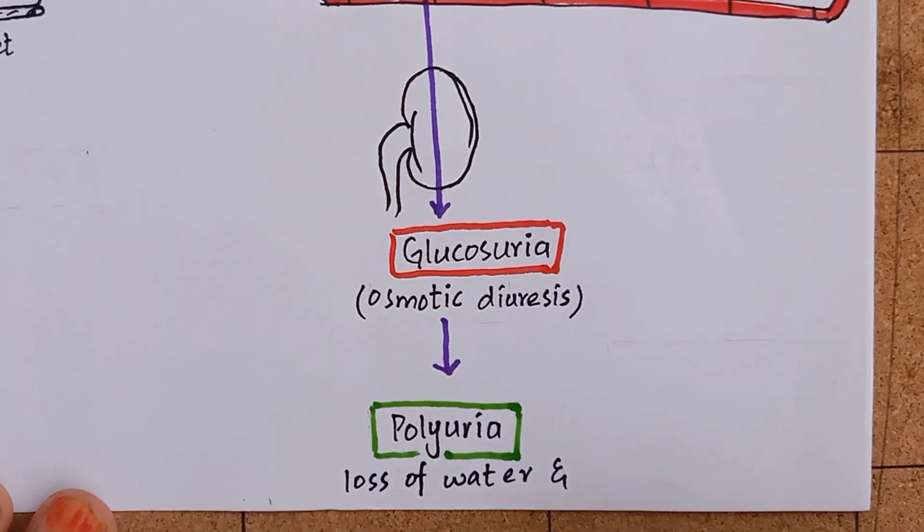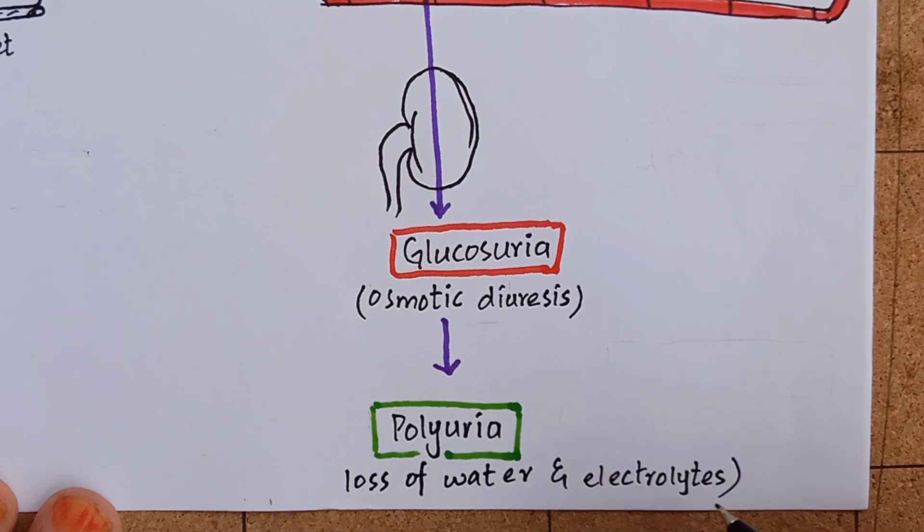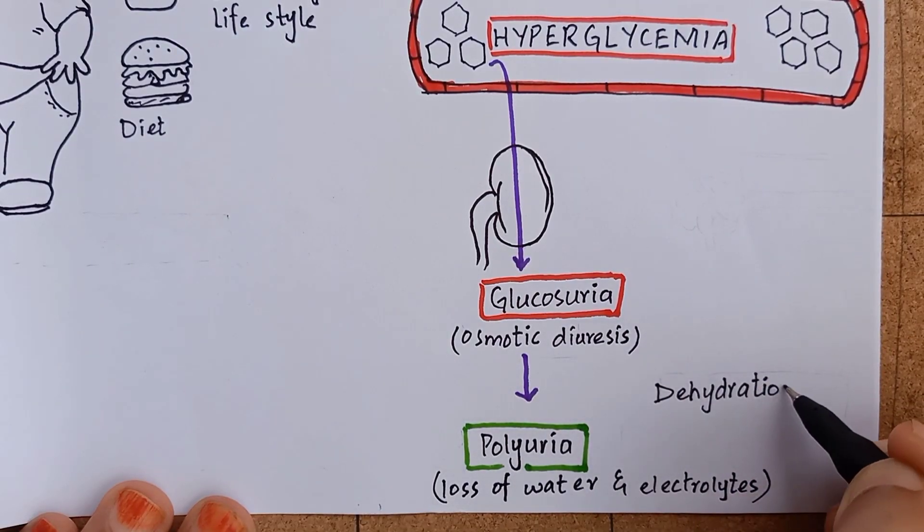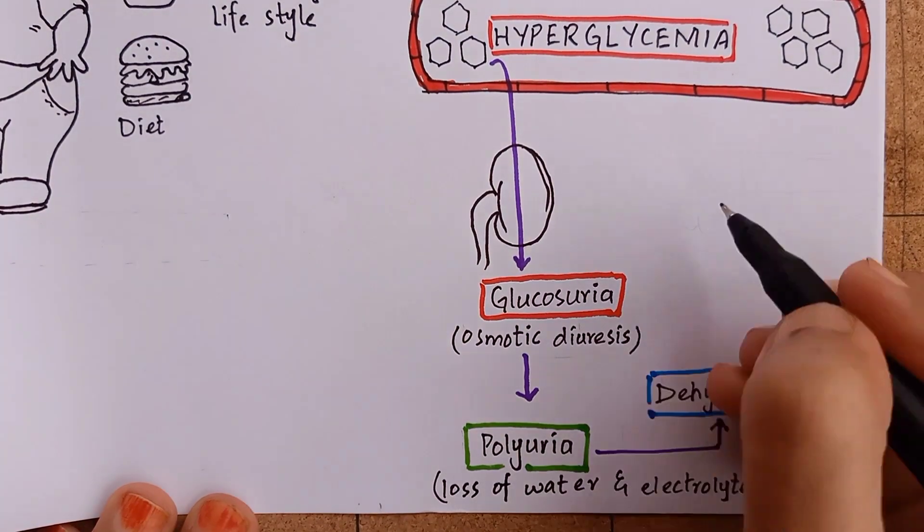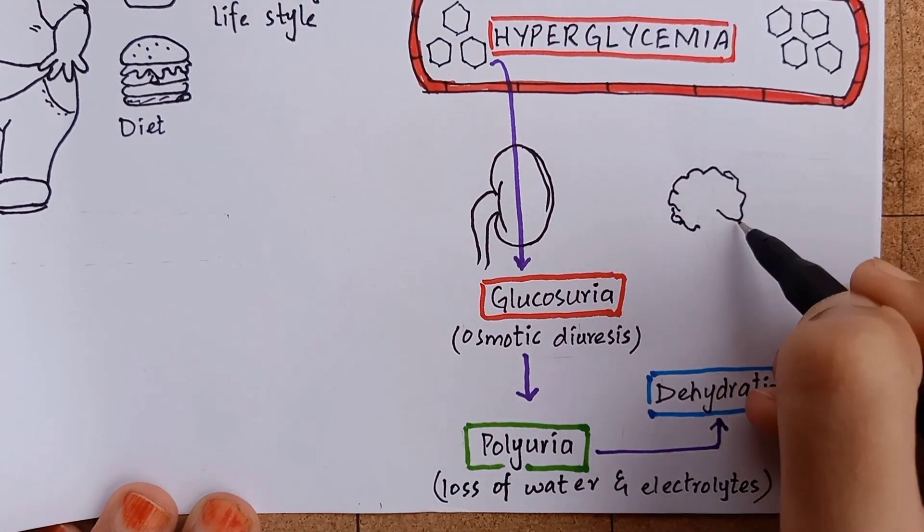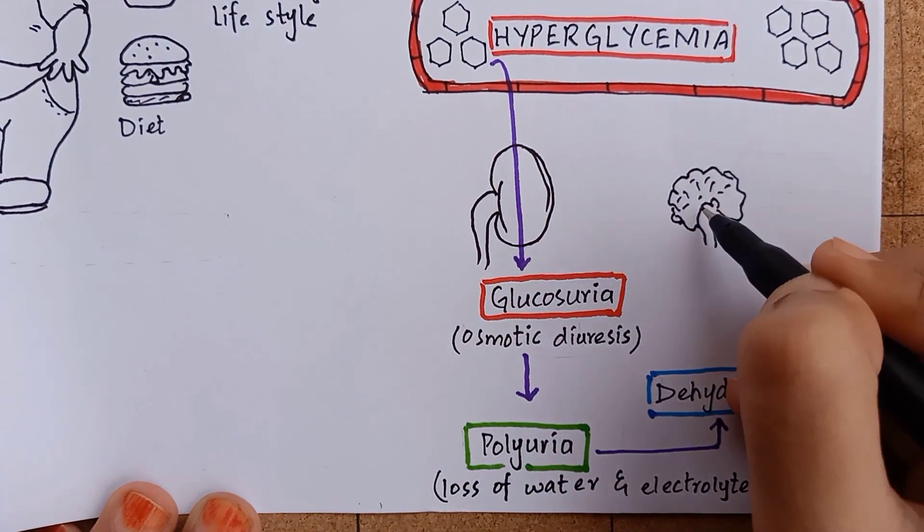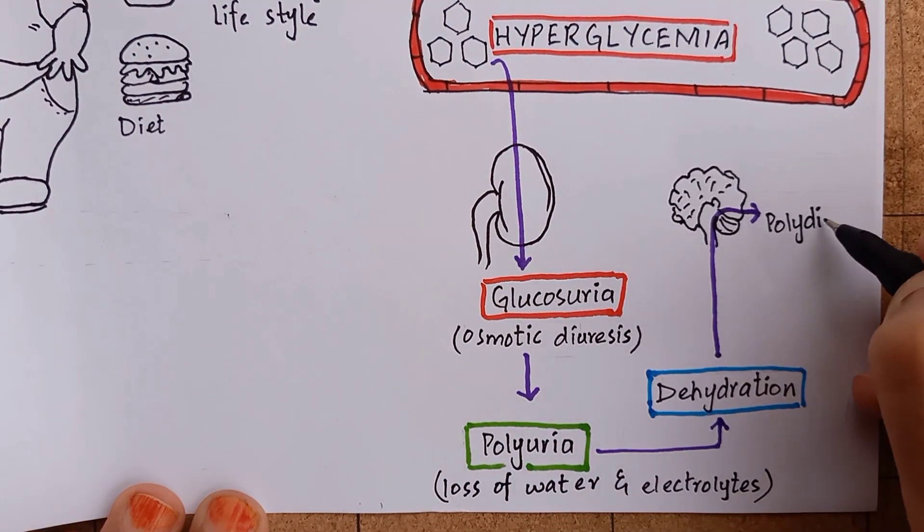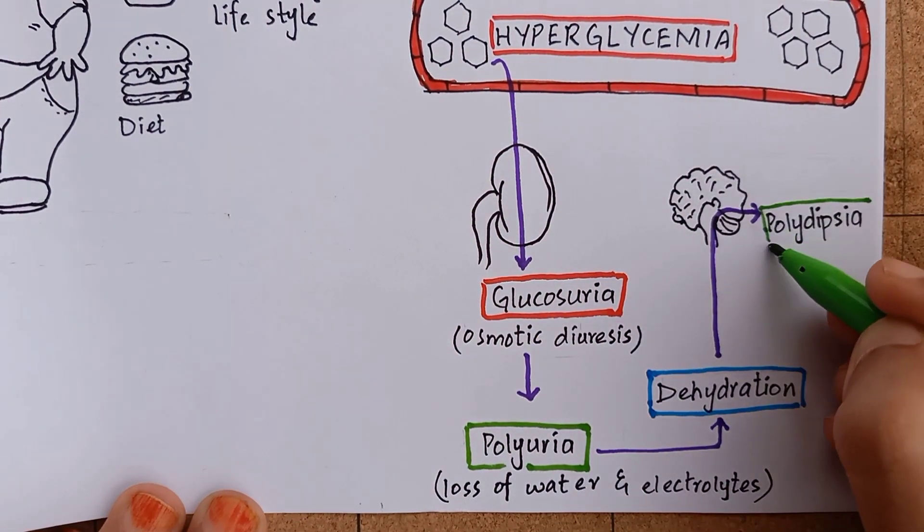Polyurea causes profound loss of water and electrolytes, resulting in dehydration. Dehydration caused by renal water loss triggers the osmoreceptors in the brain, causing excessive thirst—that is called polydipsia.